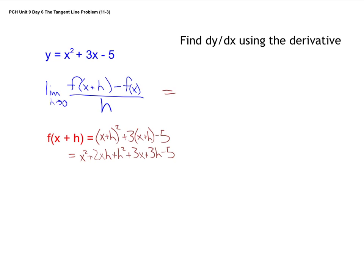We've got our formula here. So we're going to do the limit as h approaches 0 of, we've got the f of x plus h. We just found that x squared plus 2xh plus h squared plus 3x plus 3h minus 5. That's f of x plus h minus the original function x squared plus 3x minus 5. That's all over h.